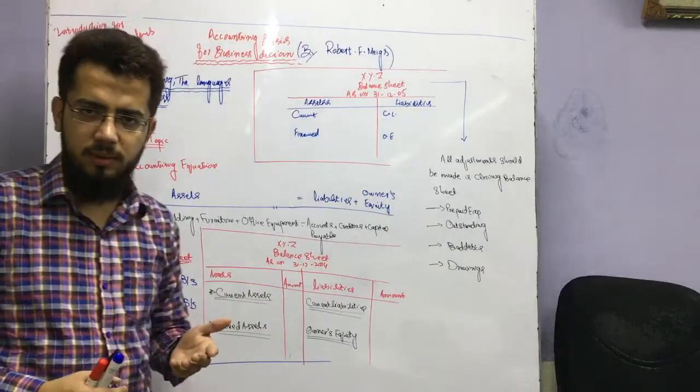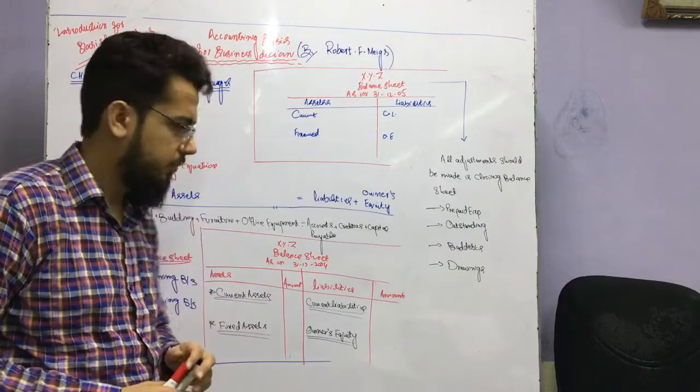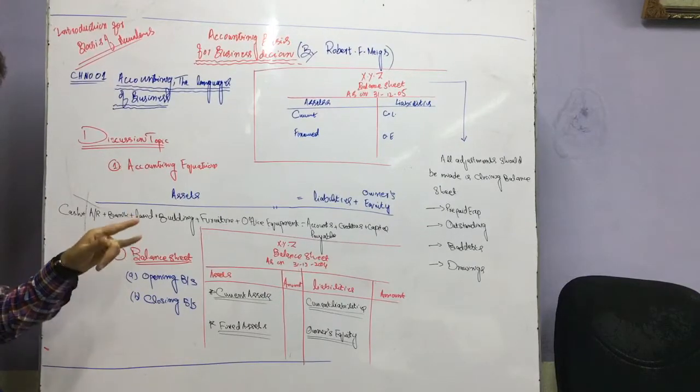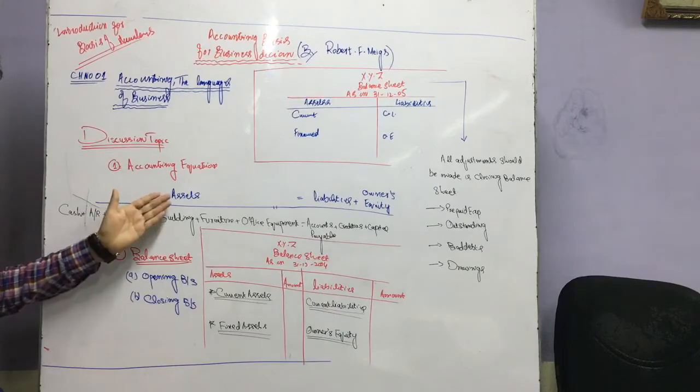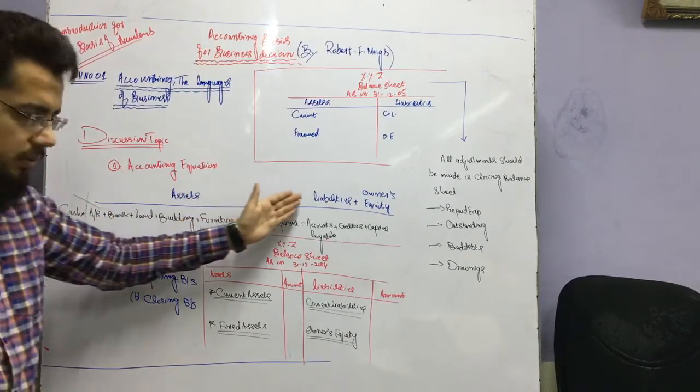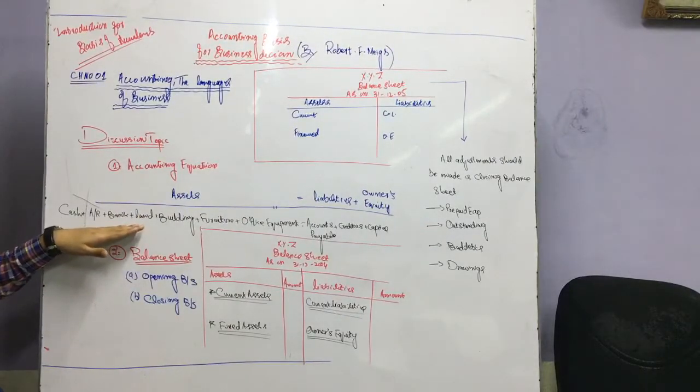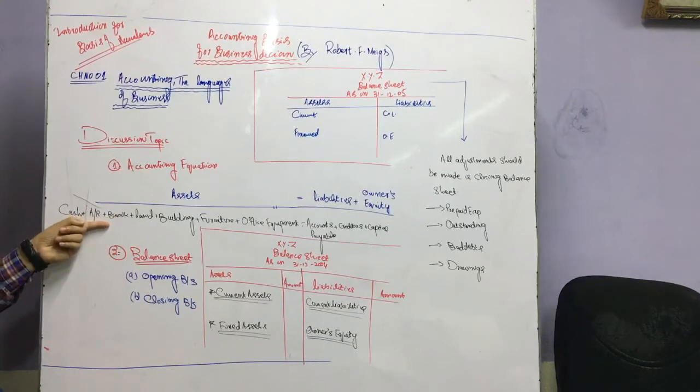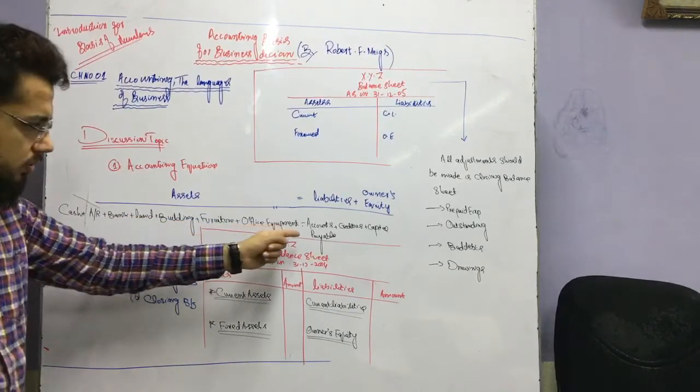First of all, debit and credit. We will draw an accounting equation and we will mention all the assets. The assets can be different, but we will try to first write the short-term period and then the long-term period. Write the assets as equal to liabilities plus owner's equity.